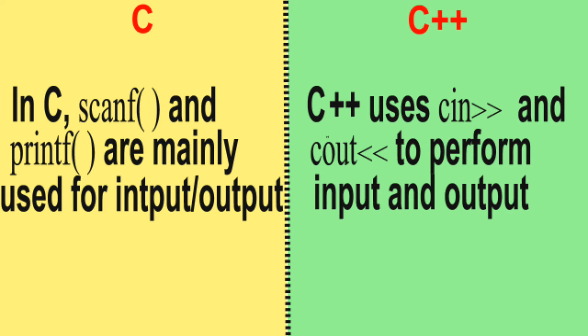Difference number 6: In C, scanf and printf are mainly used for input and output respectively. C++ uses cin and cout to perform input and output.